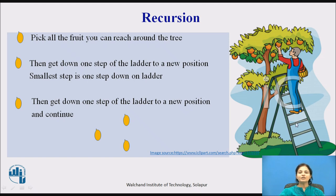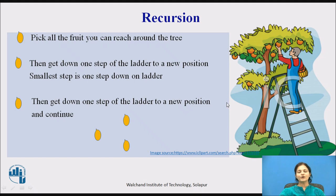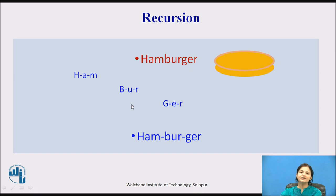Then he will count — ok, still 2 more are there. Again he will go one step down. Like this he will continue to get down from the ladder one step at a time. This is the recursion — at each small step you are completing your big task. Take one more example here.